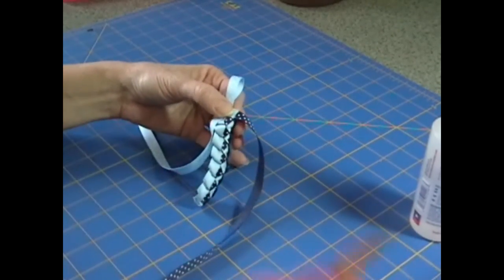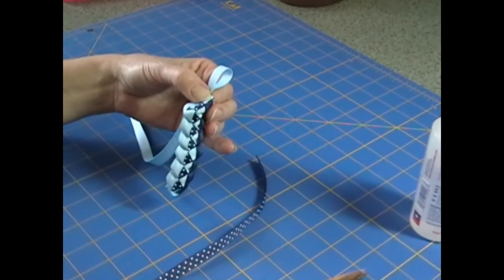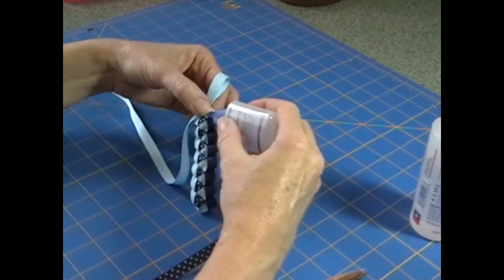Then we're going to clip our ribbon here. And you can either use the lighter or in this case I would probably use the fray check to seal the end there.